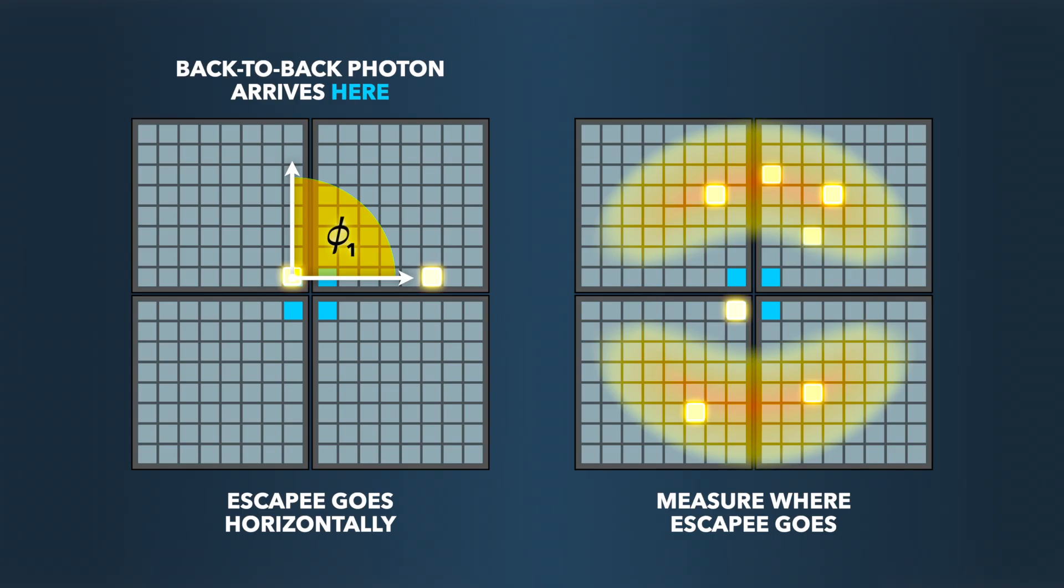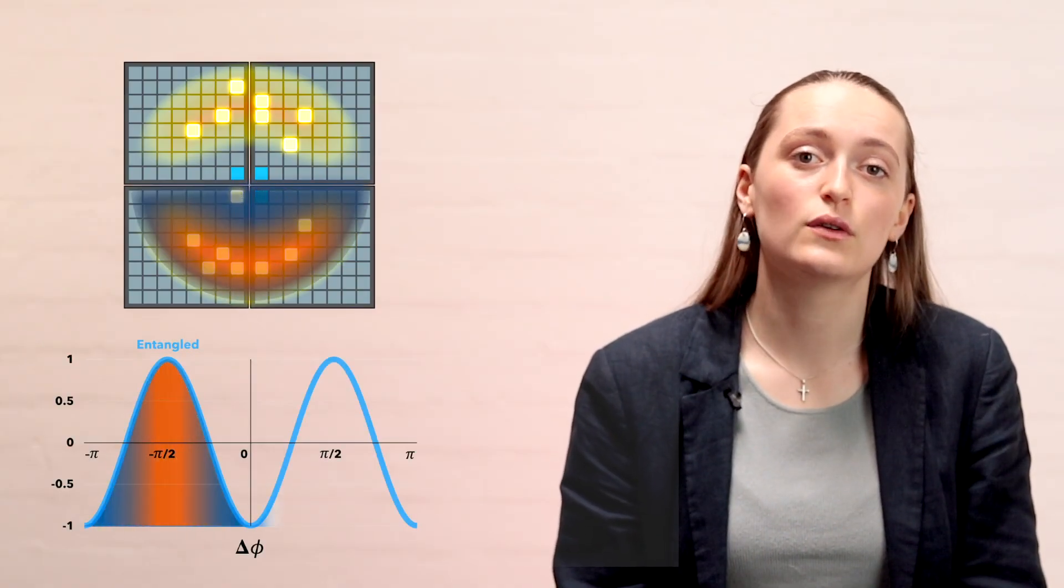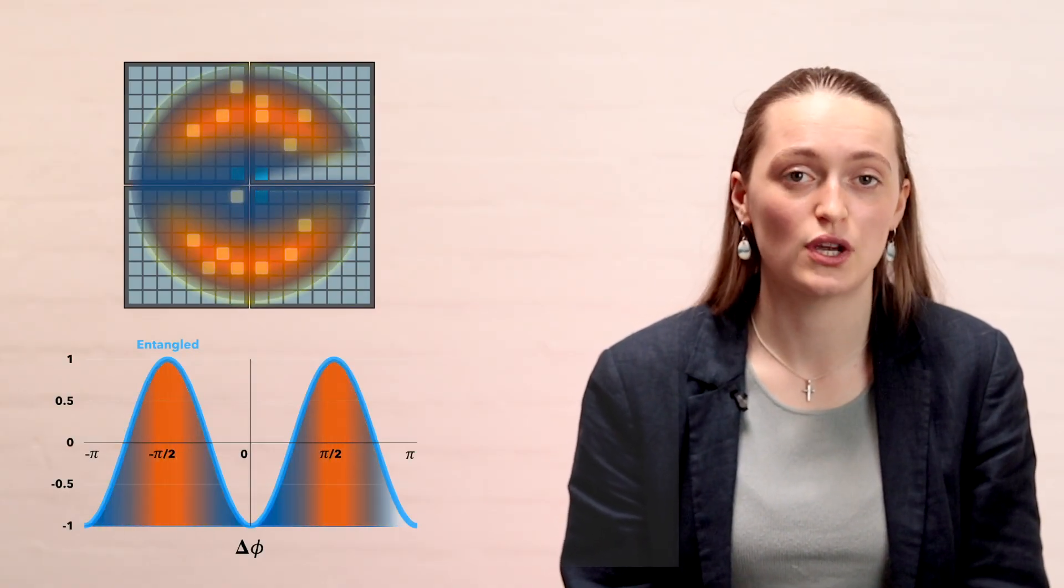It has light and dark spots on it, which means that more of the photons went in some directions than others. This is the result of the photons being entangled. We're seeing the cos²(delta phi) that Ruth explained, but this time shown in 2D.